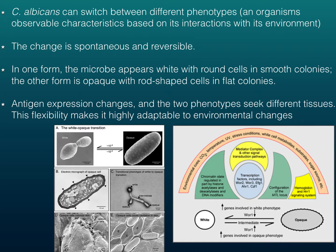Candida albicans can switch between different phenotypes, which is an organism's observable characteristics based on its interactions with its environment. The change is spontaneous and reversible. In one form the microbe appears white with round cells and smooth colonies; in another form it is opaque with rod-shaped cells and flat colonies. Antigen expression also changes and the two phenotypes seek different tissues, making it highly adaptable to environmental changes.